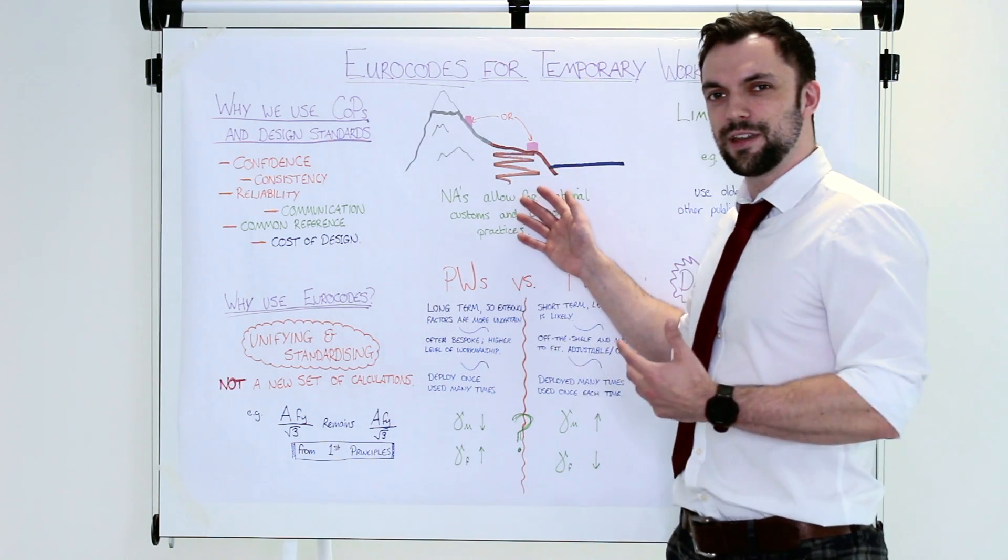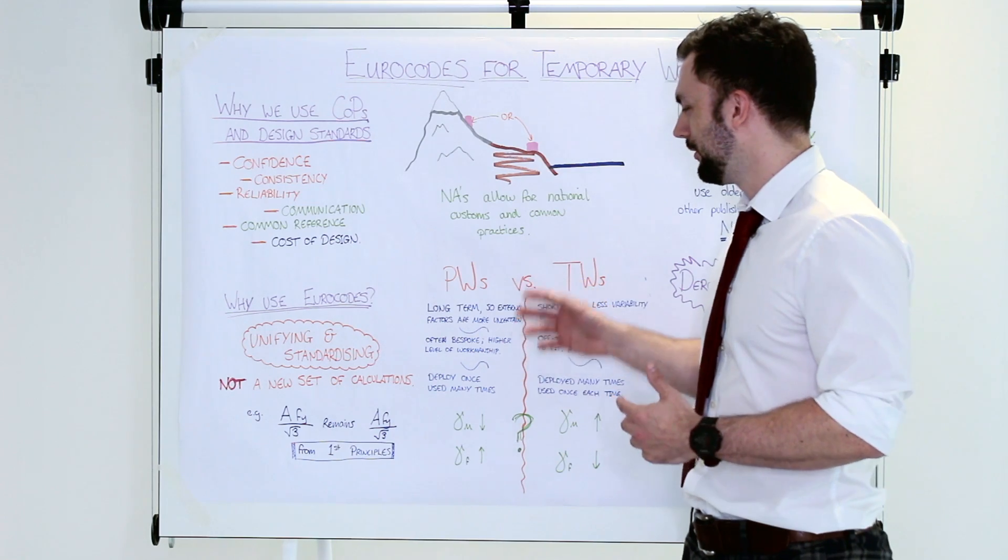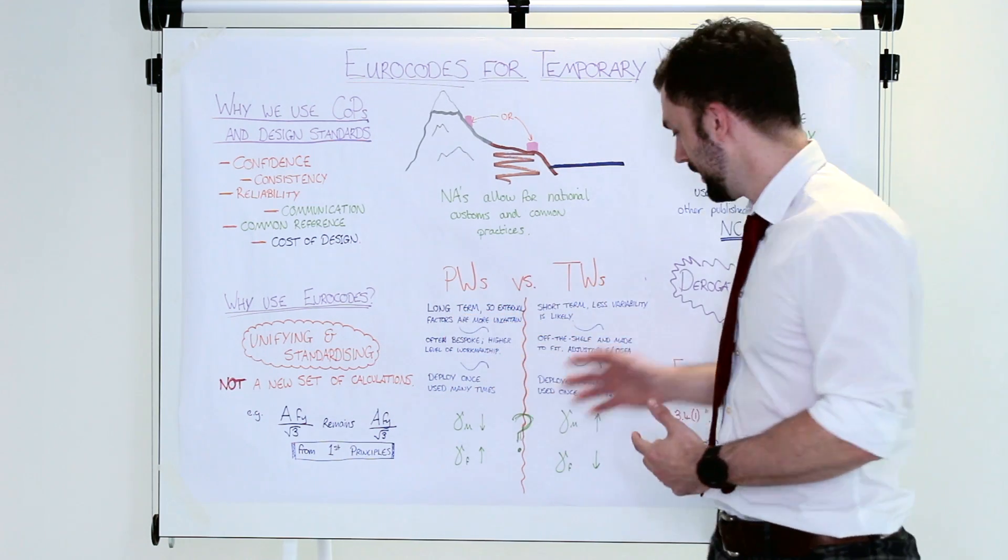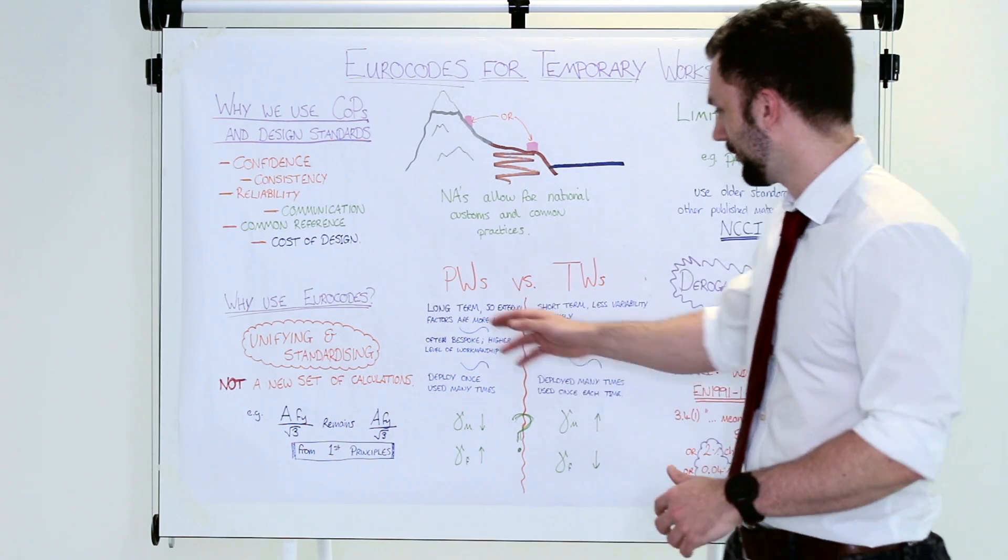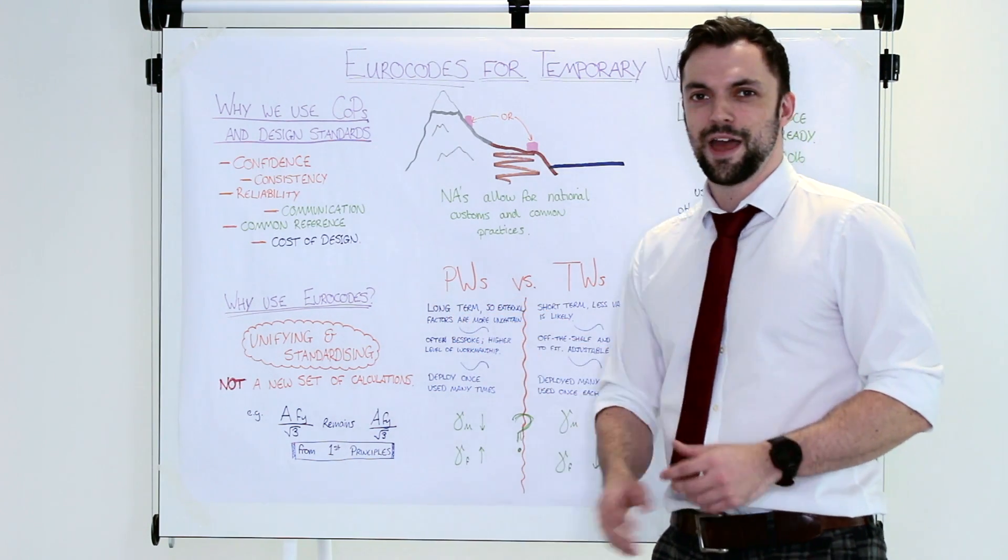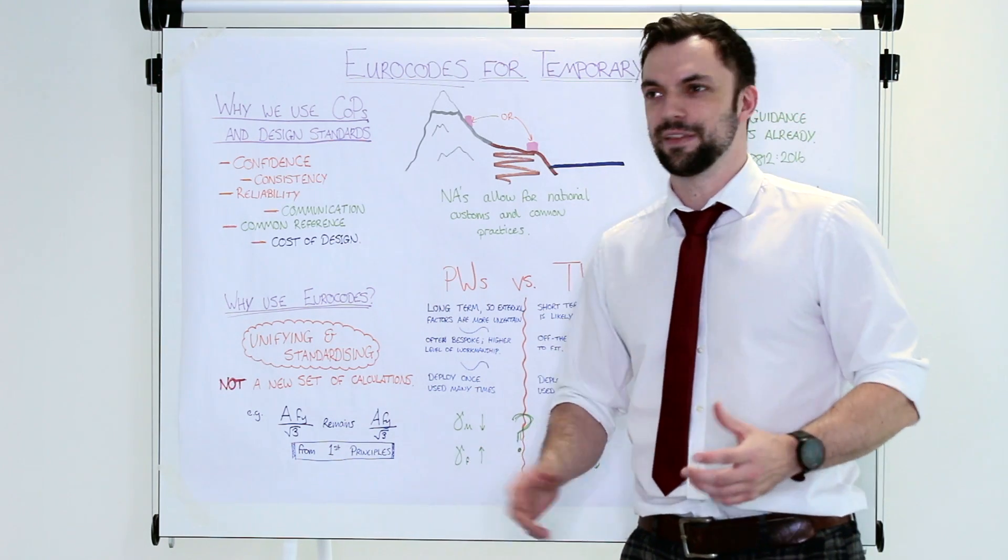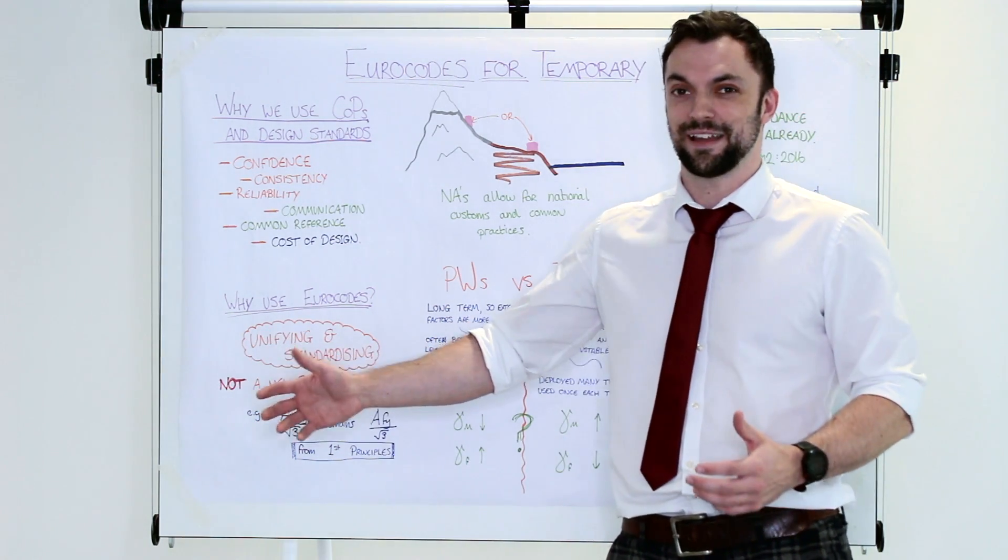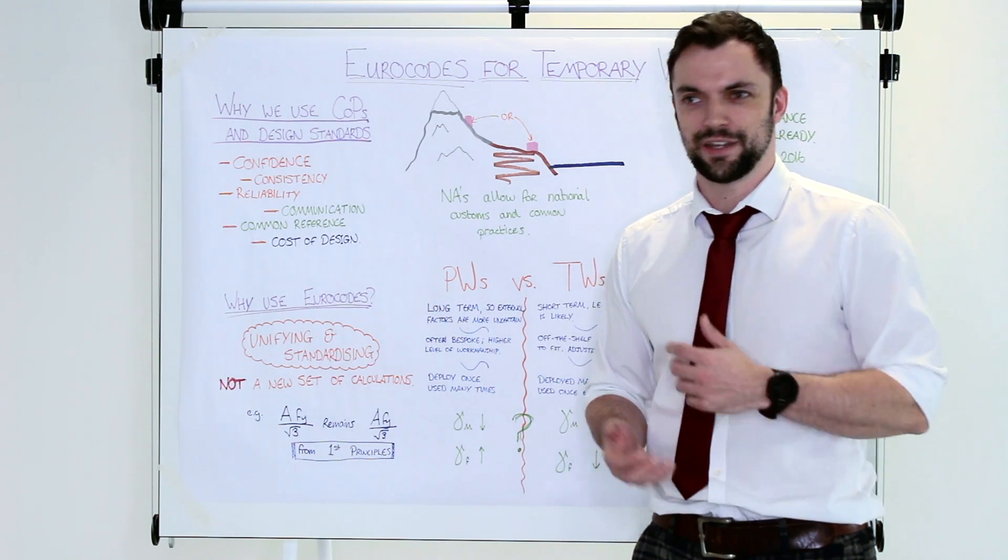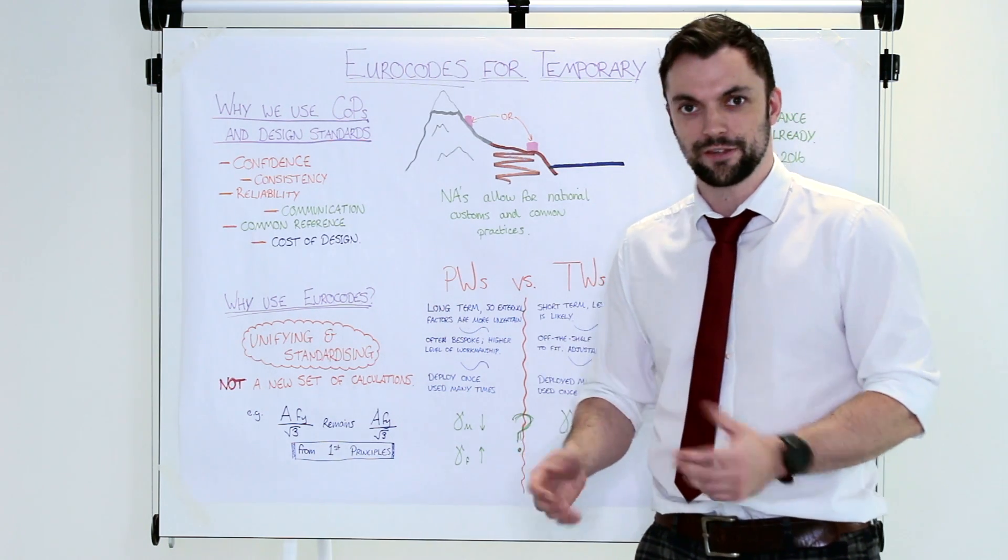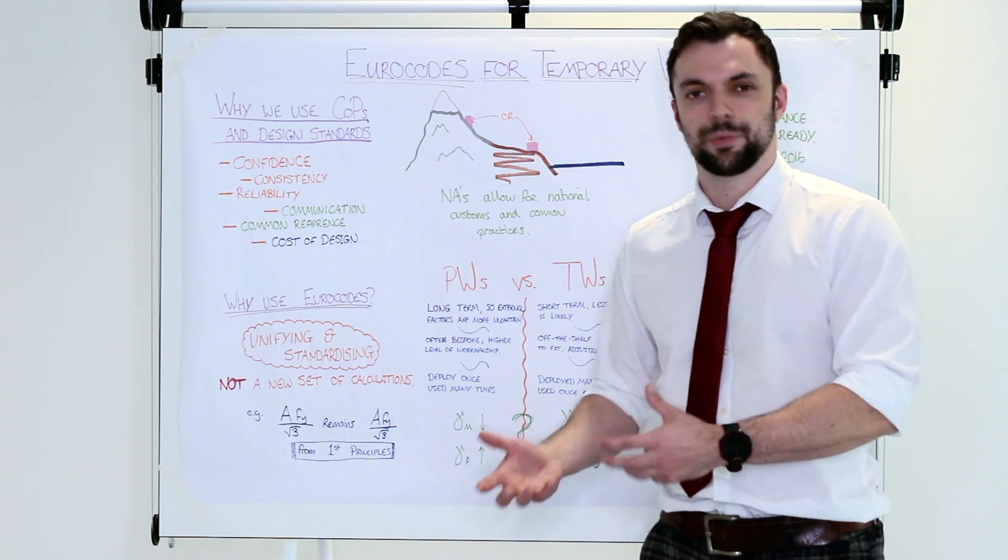So maybe we could use these national annexes in a different way. Maybe we could use these different partial factors to differentiate between permanent works and temporary works. Because there are differences when you're looking at permanent works compared to temporary works. The permanent works are long-term. External factors are difficult to pin down. You have to account for anything that might happen in the next hundred years while this building is standing. Whereas temporary works, very short-term, you only really have to worry about what's going to happen for the next two weeks or the next twelve weeks. However long that structure, that shoring or that scaffolding is going to be in place.